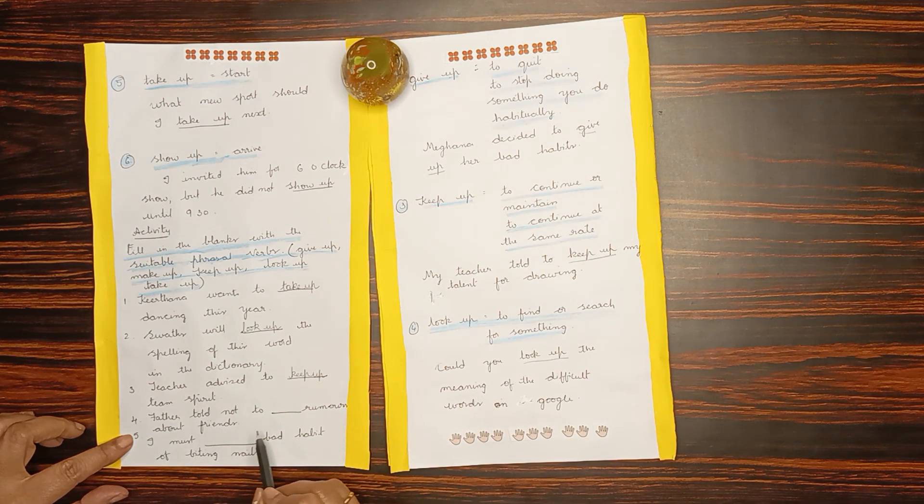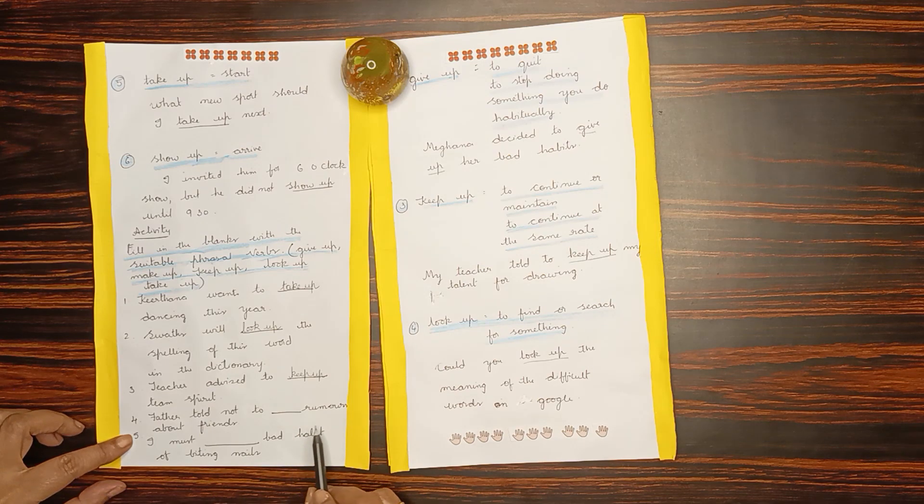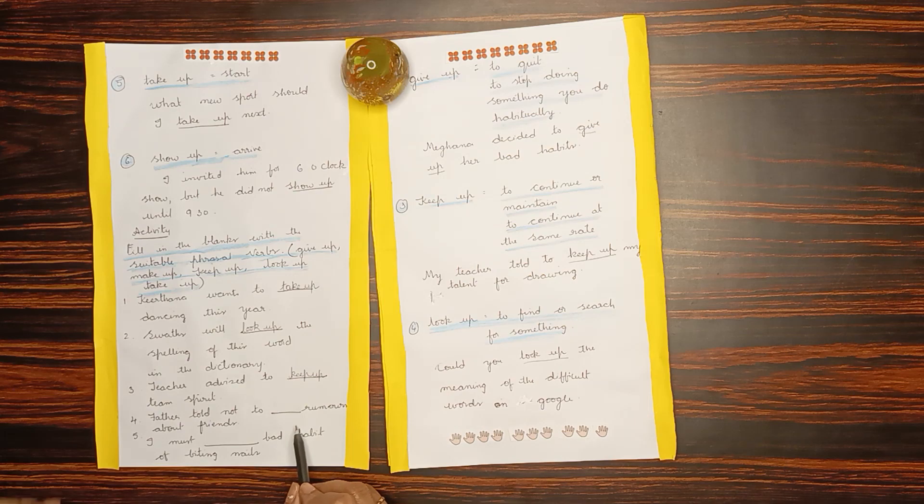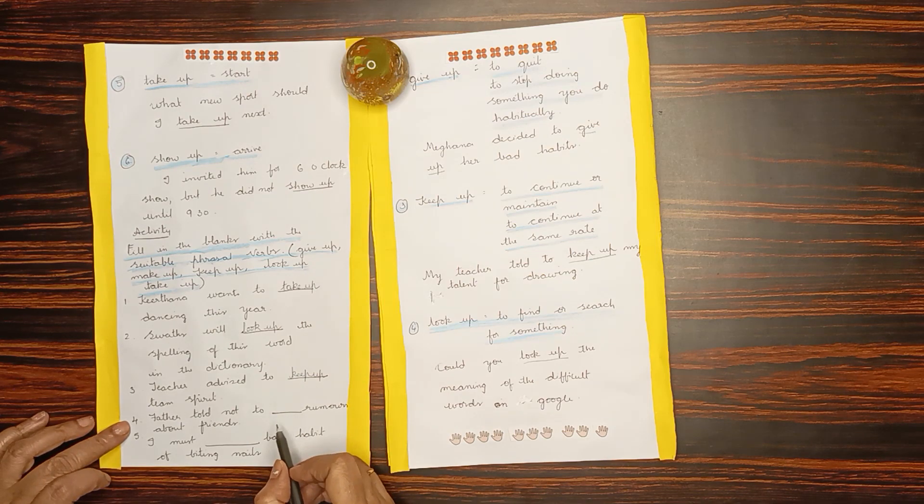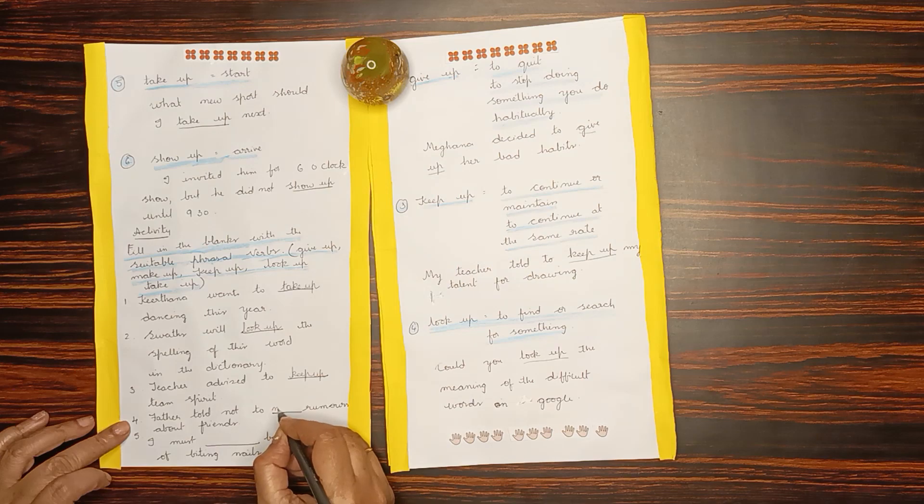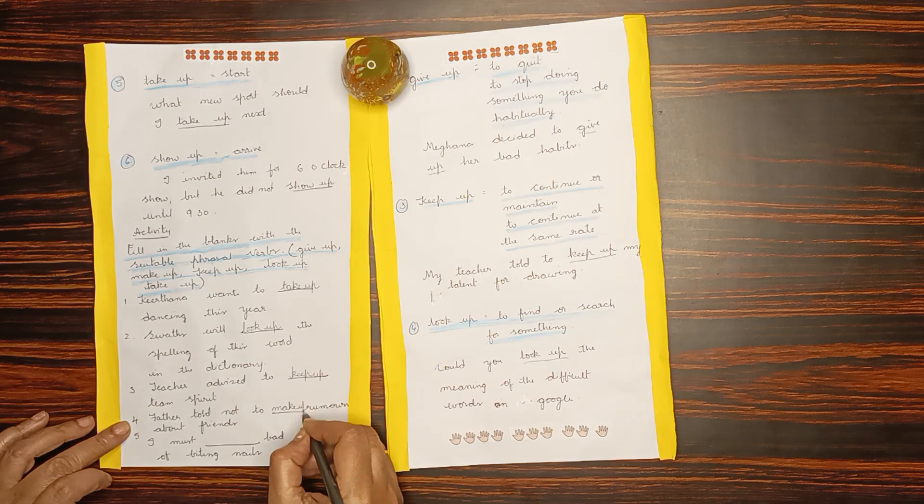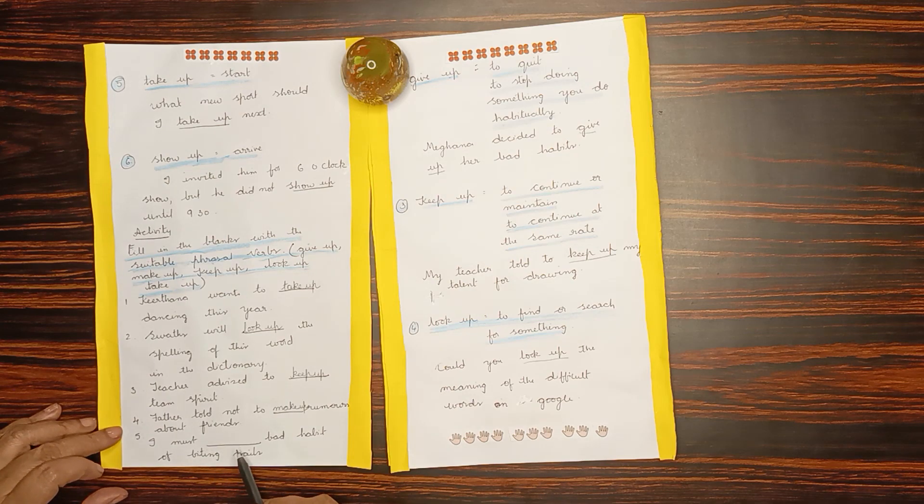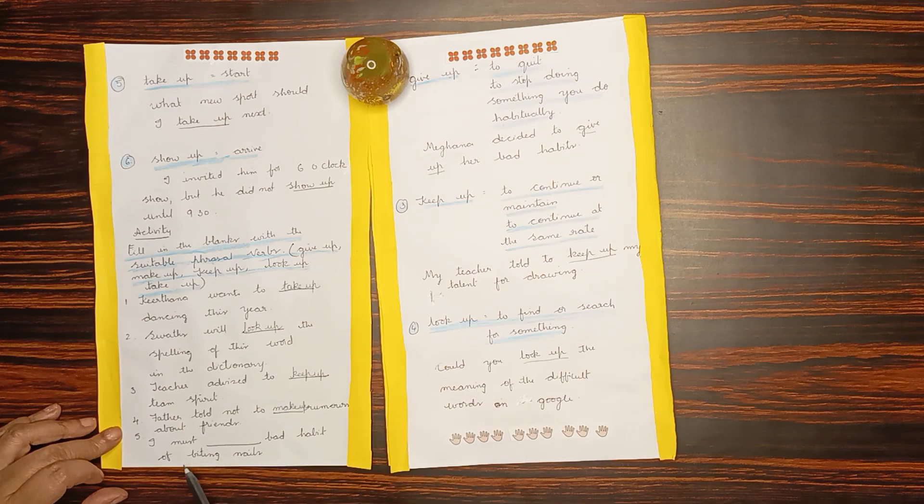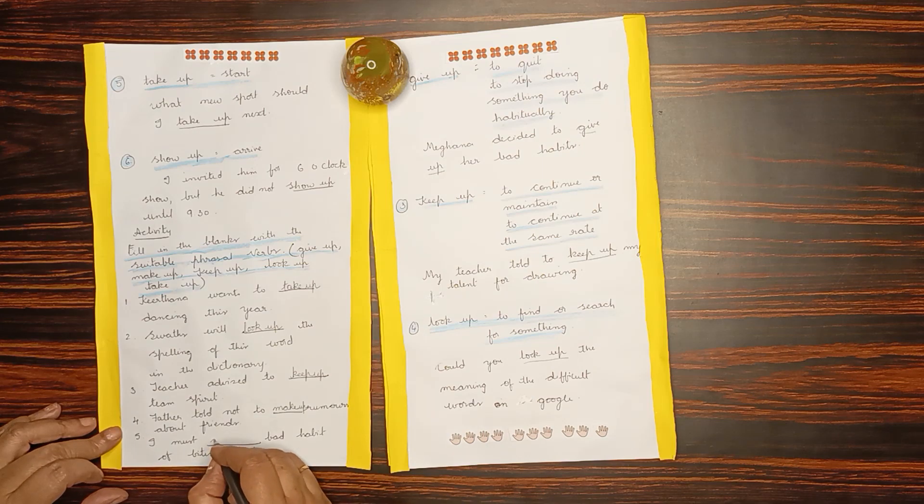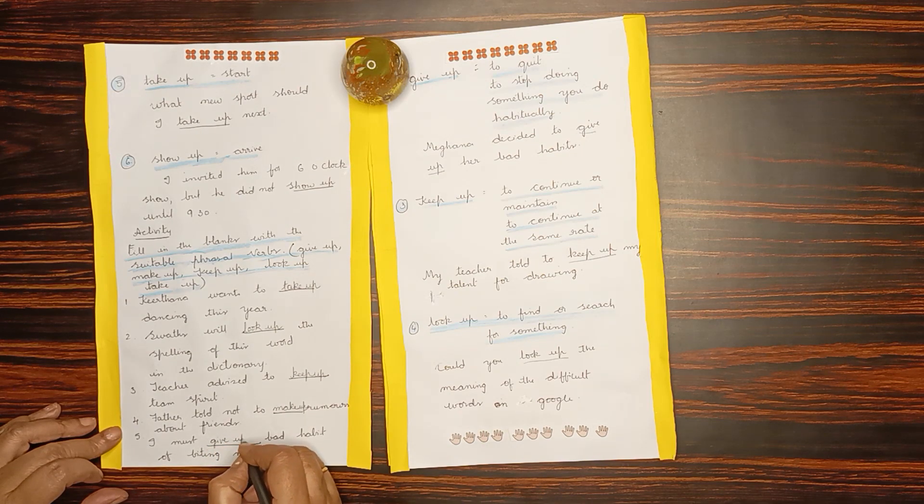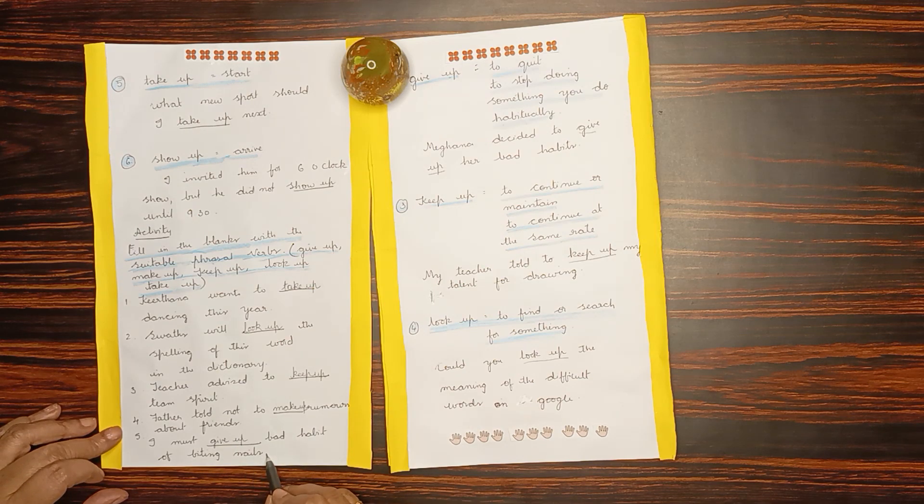Father told not to dash rumors about friends. Father told not to make up rumors about friends. One more example: I must dash bad habit of biting nails. I must give up. Give up is the phrasal verb here. I must give up bad habit of biting nails.